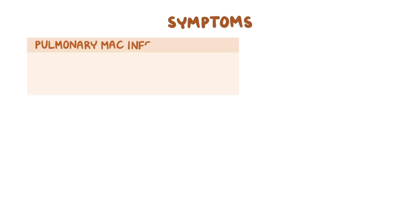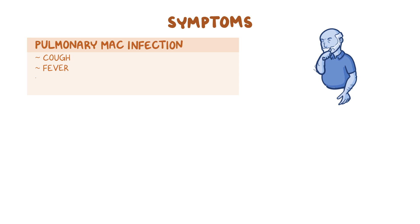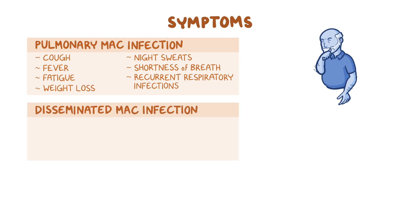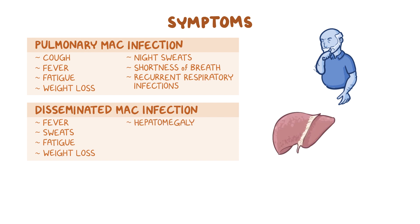Symptoms of pulmonary MAC infections include cough, fever, fatigue, weight loss, night sweats, shortness of breath, and recurrent respiratory infections. With disseminated MAC infections, there may be nonspecific symptoms such as fever, sweats, fatigue, and weight loss. On a physical exam, there can be hepatomegaly or an enlarged liver, jaundice or yellow pigmentation of the skin and mucous membranes, and lymphadenopathy, which means swollen lymph nodes.